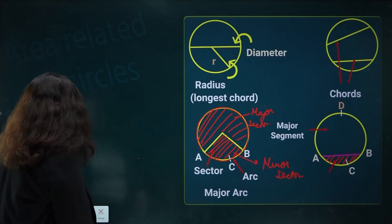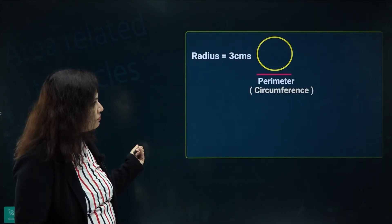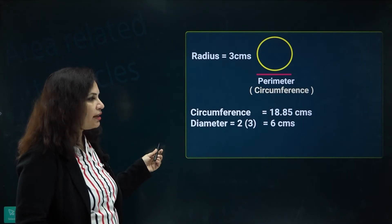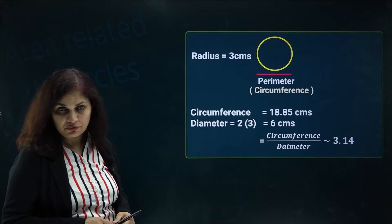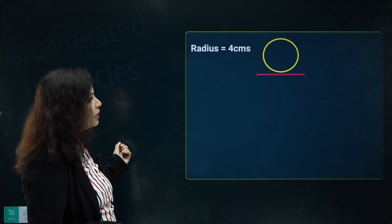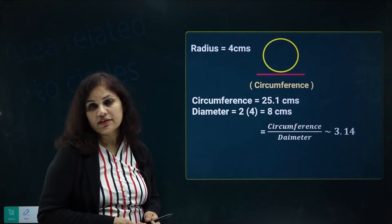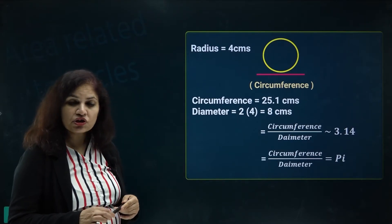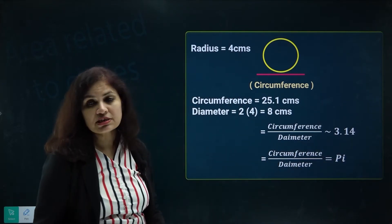Suppose we have a circle of radius 3 centimeters. The circumference is 18.85 cm, and the diameter is 6 cm. The ratio of circumference to diameter approaches 3.14. Taking another circle of radius 4 cm, the circumference is 25.1, and dividing circumference by diameter again gives approximately 3.14. Every time we take the ratio of circumference to diameter of any circle, we get a fixed value of 3.14.